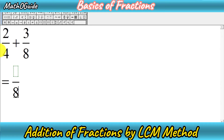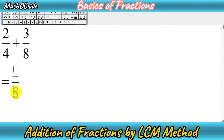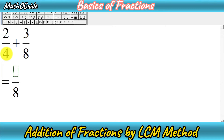The LCM of 4 and 8 is 8. So we write 8 as the denominator of our resultant fraction. Now, divide this LCM by the denominator of the first fraction: 8 divided by 4 gives us 2.